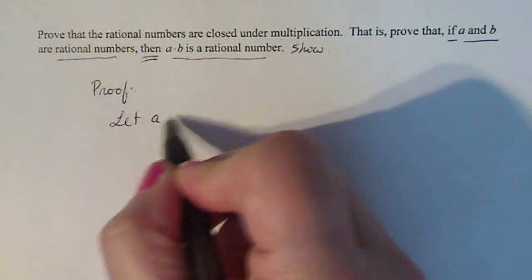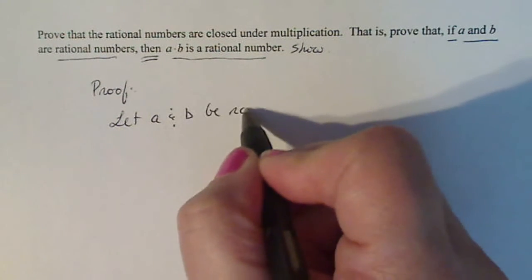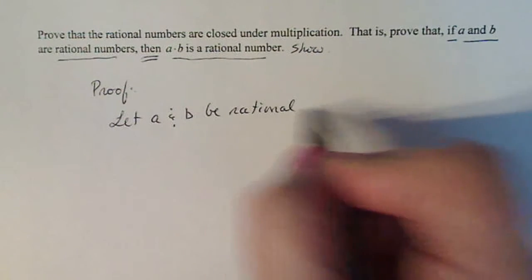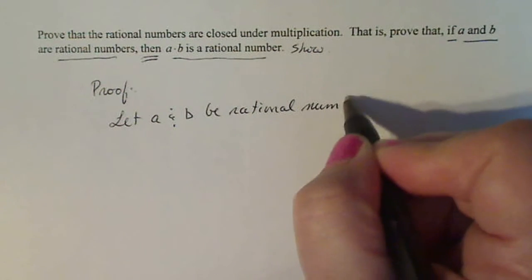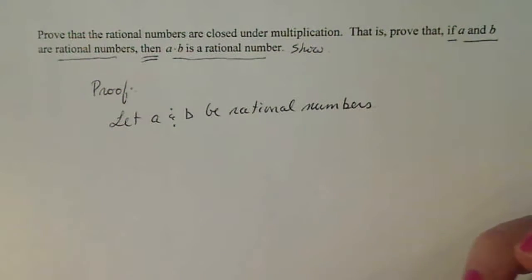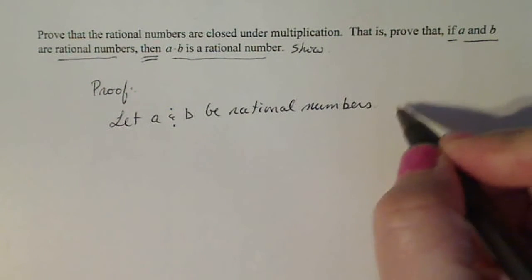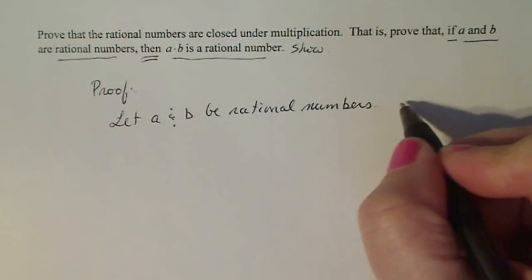Let A and B be rational numbers. You start there and then you use the definition of a rational number for each of those A and Bs so that you can manipulate it using algebra.